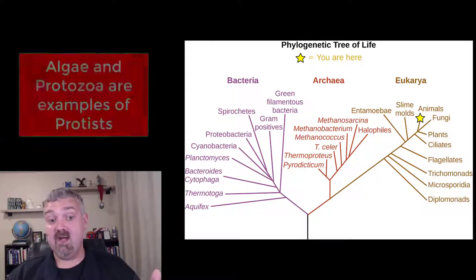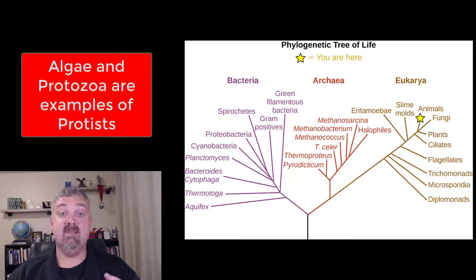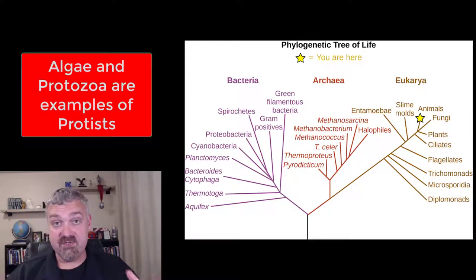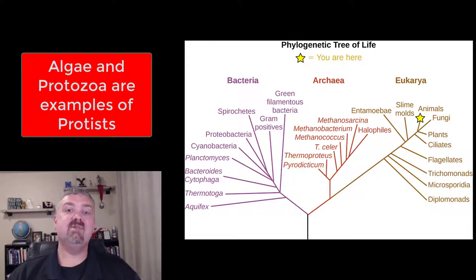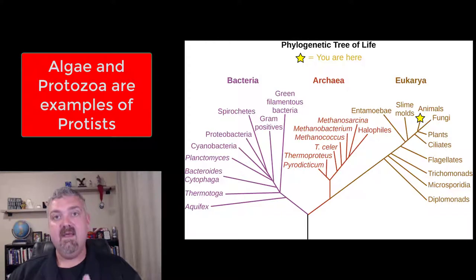Now they do matter in microbiology though, because algae and your protozoa — your single-celled eukaryotic organisms — would be classified as protists. So those are the three domains of life: bacteria, the archaea, and the eukarya.